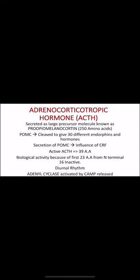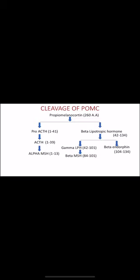The active ACTH hormone contains 39 amino acids. Biological activity resides in the first 23 amino acids from the N-terminal, while the remaining 16 amino acids are inactive. ACTH has a diurnal 24-hour rhythm and uses cyclic AMP as its secondary messenger.